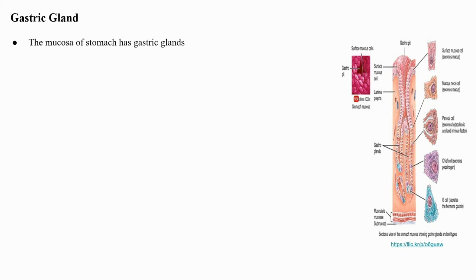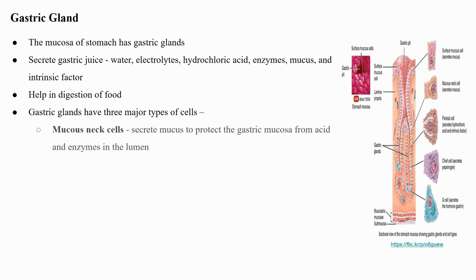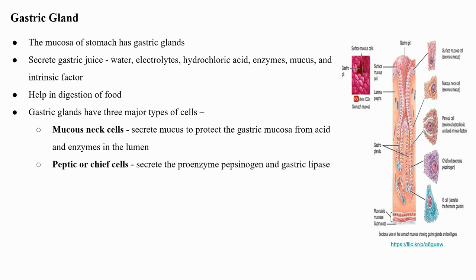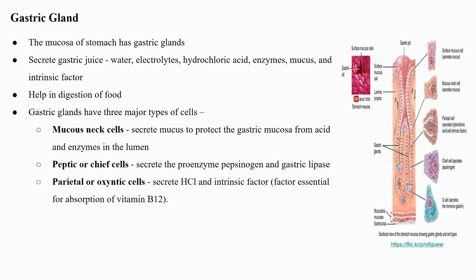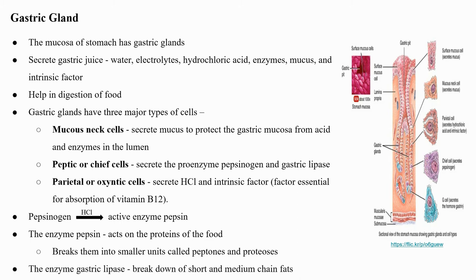The mucosa of the stomach has gastric glands which secrete gastric juice consisting of water, electrolytes, hydrochloric acid, enzymes, and intrinsic factor. Gastric glands have three major types of cells: mucus neck cells, which secrete mucus to protect the gastric mucosa; peptic or chief cells, which secrete proenzyme pepsinogen and gastric lipase; and parietal or oxyntic cells, which secrete hydrochloric acid and intrinsic factor essential for absorption of vitamin B12. The proenzyme pepsinogen is converted into active enzyme pepsin by hydrochloric acid. Pepsin acts on proteins and breaks them into smaller units called peptones and proteoses. Gastric lipase helps in the breakdown of short and medium chain fats.